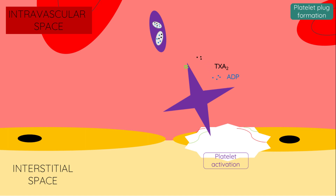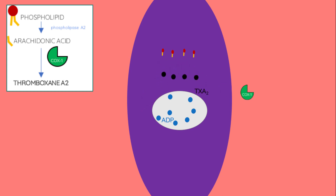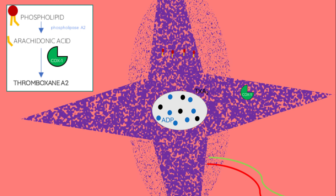Thromboxane A2 causes activation of other platelets, helping to facilitate aggregation of platelets and clot formation. Thromboxane A2 is made inside platelets by cyclooxygenase 1 and released when the platelet becomes activated.